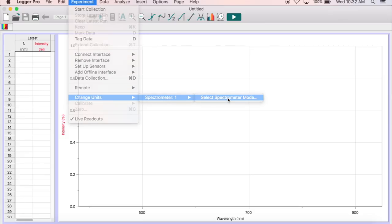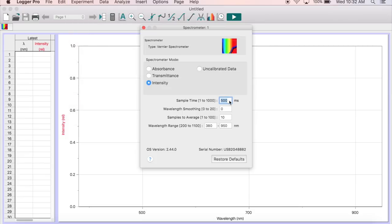You can also set the Sample Time to 1000 milliseconds if 500 is not sufficient to detect the light intensity from your solution.